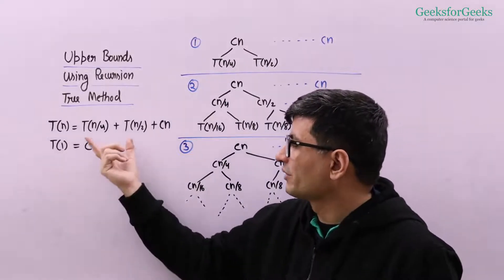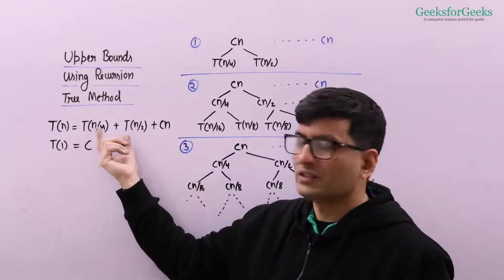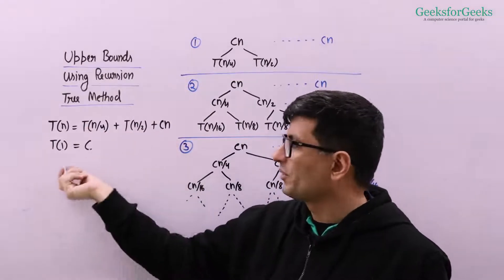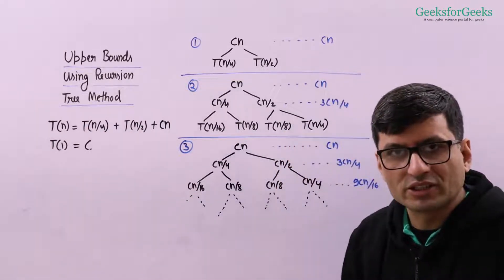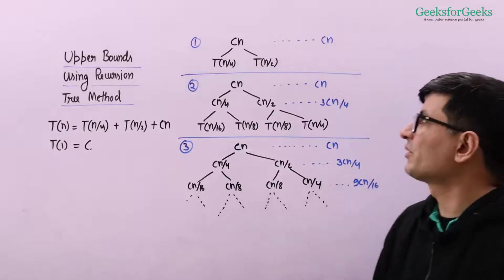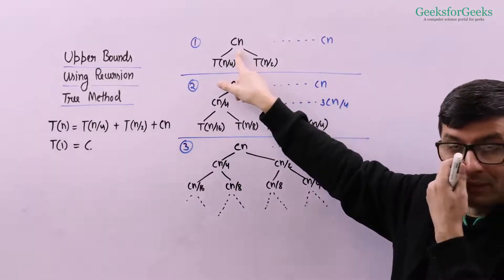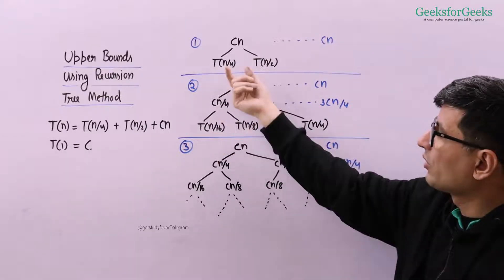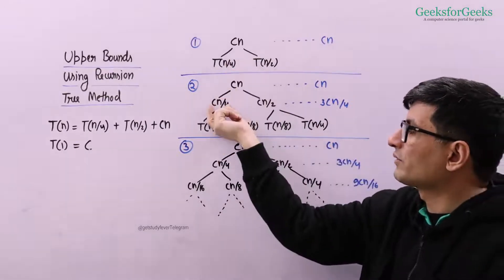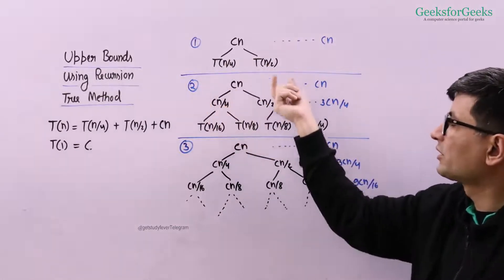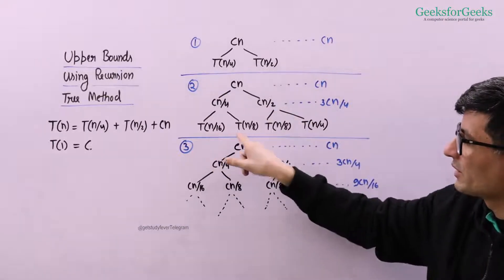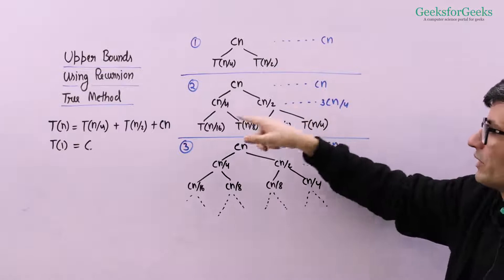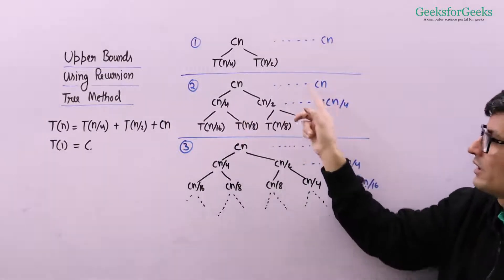Here is one example: T(n) = T(n/4) + T(n/2) + Cn, and T(1) = C. If I break this using the recursion tree method, I write the non-recursive part, then the recursive parts, then break further. The non-recursive parts are Cn/4 and Cn/2, giving T(n/16), T(n/8), T(n/8), and T(n/4).